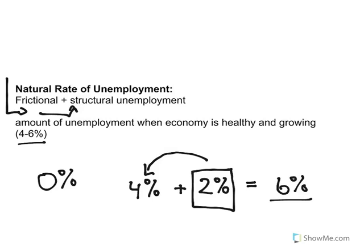The opposite is also true: if there's no cyclical unemployment and the natural rate is around three percent, then allowing a little more frictional and structural unemployment — giving people more freedom to move jobs — will get us back to where we need to be. It's a Goldilocks situation where you don't want too much unemployment, but you also don't want zero, with people stuck doing jobs the economy no longer needs.